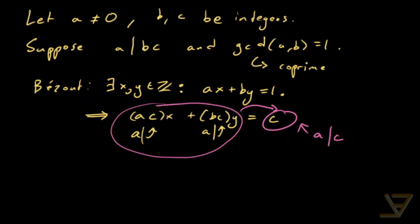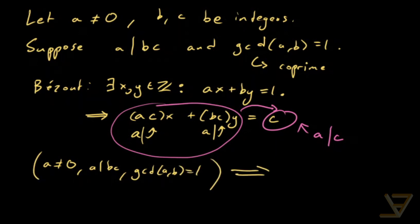So our conclusion is that if A is non-zero, A divides BC, and GCD(A, B) is equal to 1, then altogether this means we can turn A divides BC into A just divides C. And that is Gauss's divisibility lemma.